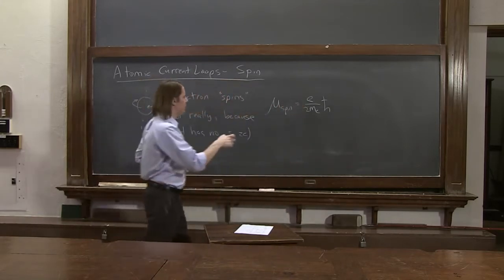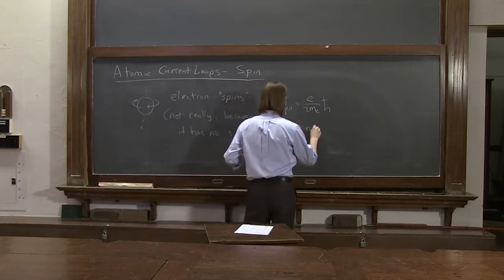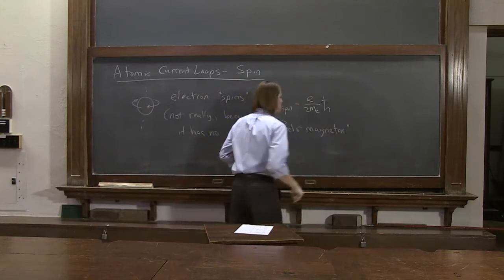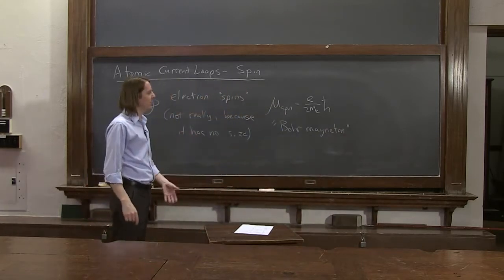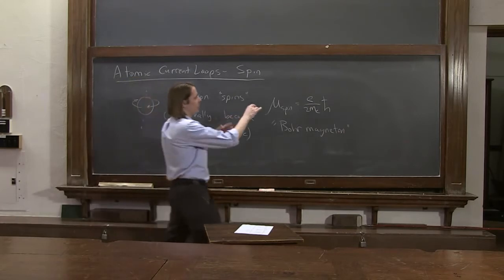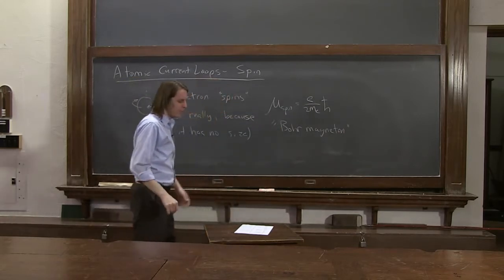Basically the same value. So this is what's called the Bohr magneton. You can sort of think of it as the fundamental unit for microscopic magnetic moment. It's not really a unit. It's sort of a small expression. But everything is often referred to in units of the Bohr magneton.